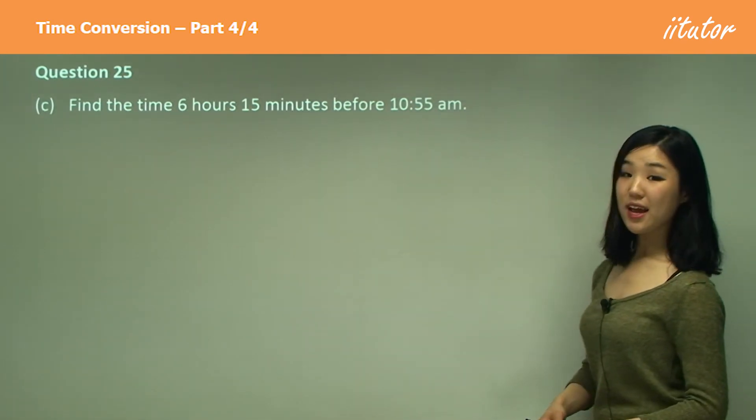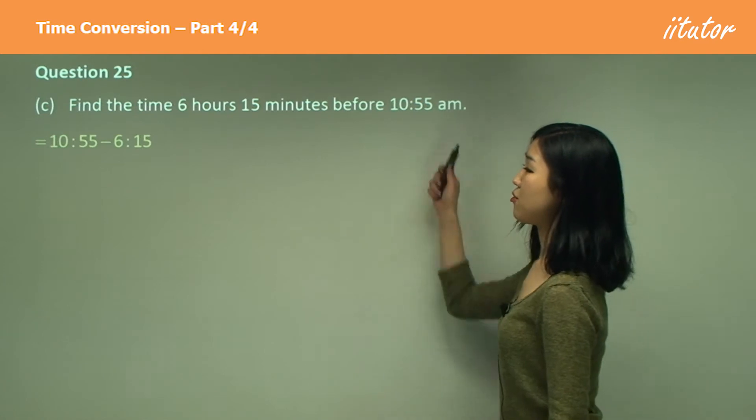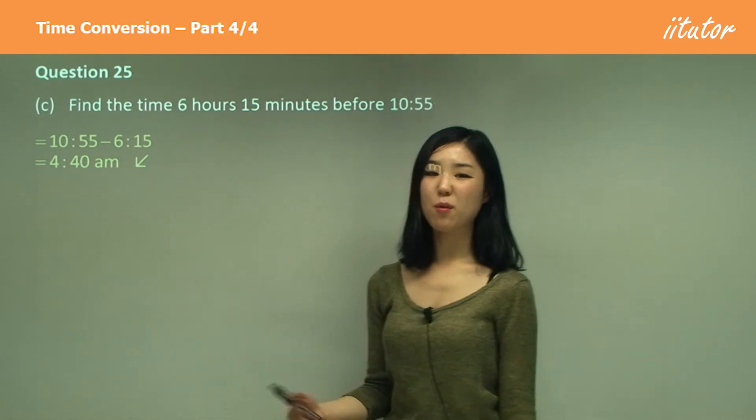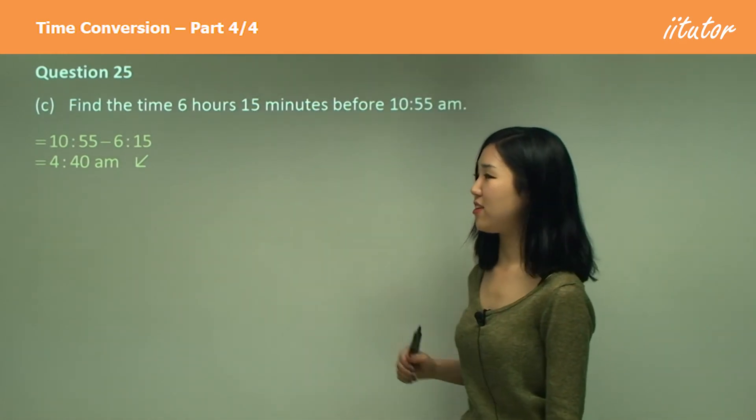6 hours 15 minutes before 10:55. So this time, we're going to be subtracting 10:55 minus 6:15, which is 4:40 a.m. That was an easy one. We just need to subtract the units together.